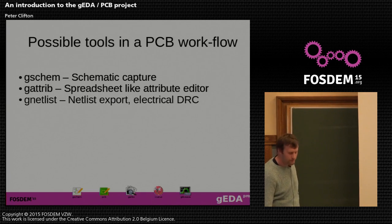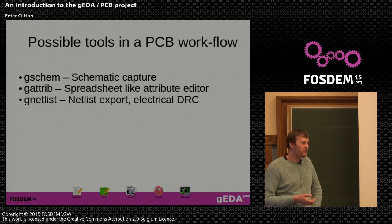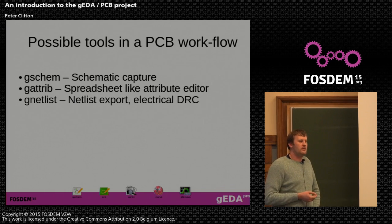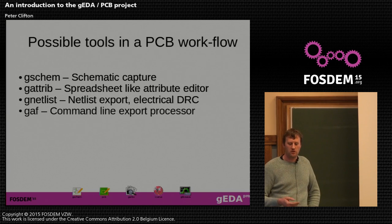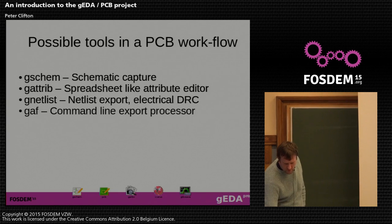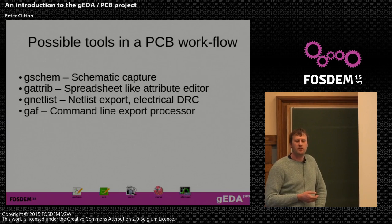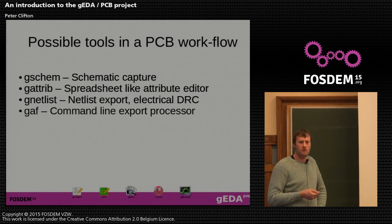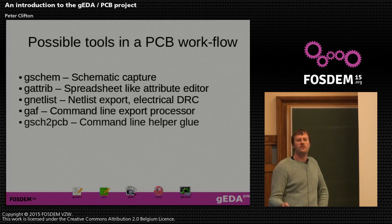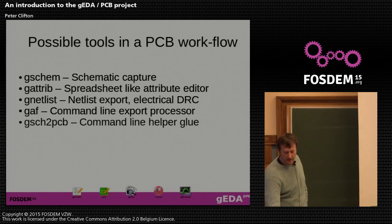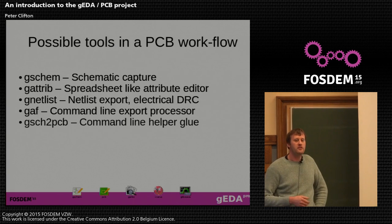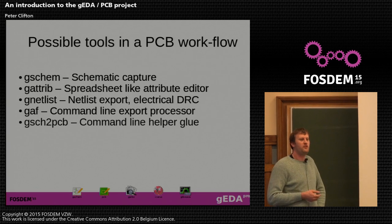The GAF tool — G-Schem and Friends — was written by Peter Brett and is used for command-line scripting of exports. If you want a makefile that takes your schematics, turns them into PDFs, and concatenates those PDFs, you use the GAF tool. There's also gschem-to-PCB, a command-line tool that has existed for a long time, allowing you to cross-check your schematic components against your layout, ensuring you have correct footprints and netlists in your PCB editor.